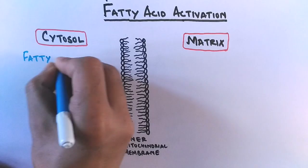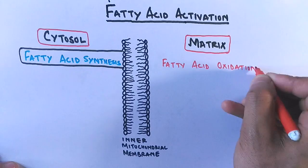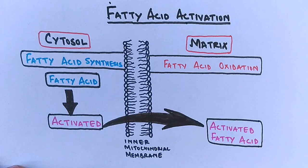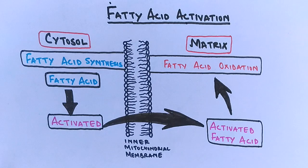We know fatty acid synthesis occurs in cytosol and on the other hand fatty acid oxidation occurs in matrix. Just before the oxidation, each fatty acid is activated and then the activated fatty acids get transported to matrix where oxidation occurs. So let's see in detail how this activation of acids occurs within the cells.